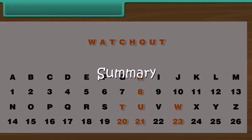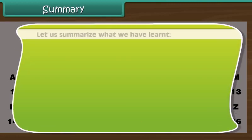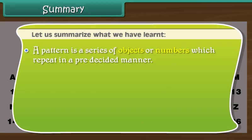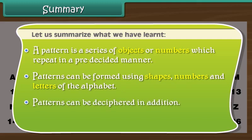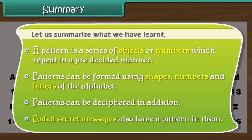Summary. Let us summarize what we have learned. A pattern is a series of objects or numbers which repeat in a pre-decided manner. Patterns can be formed using shapes, numbers and letters of the alphabet. Patterns can be deciphered in addition. Coded secret messages also have a pattern in them.